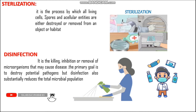Spores are the resistive form of bacteria. Whenever a bacterium faces an unfavorable situation, it converts into a spore form. This spore form cannot be easily destroyed — it needs a tedious process for complete destruction. Acellular entities — the best example is viruses, because viruses do not have a proper cellular organization. In fact, they have no cellular organization and are considered non-living organisms when present outside a host.